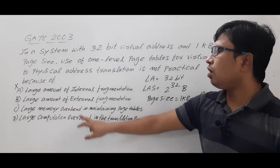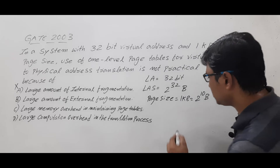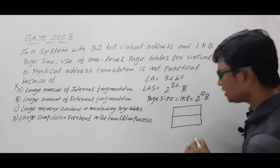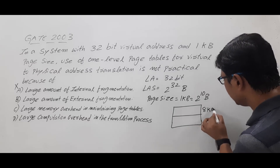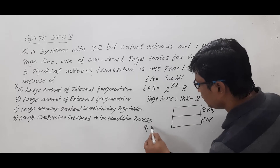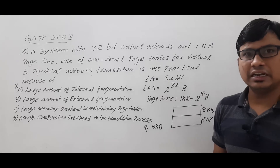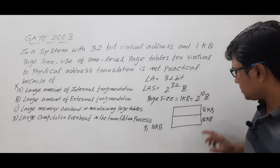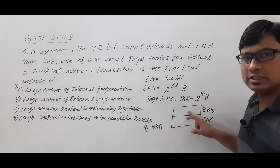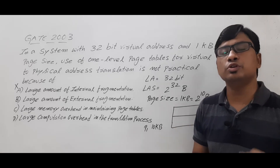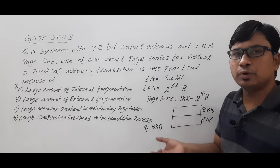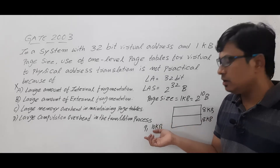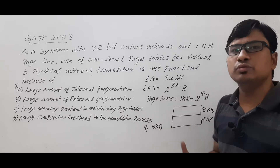Now look at option B: large amount of external fragmentation. Consider the free space in main memory is split into two partitions of 8 KB each, and you have a process P1 requesting 10 KB. In contiguous memory allocation you cannot span process P1 into multiple partitions — even though total free space is 16 KB, we cannot allocate 10 KB for P1. This situation is called external fragmentation.